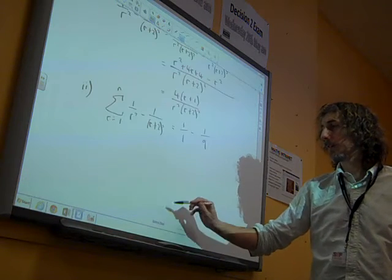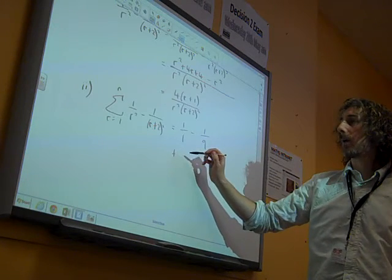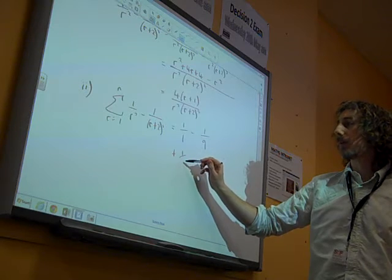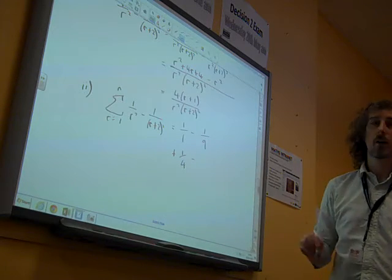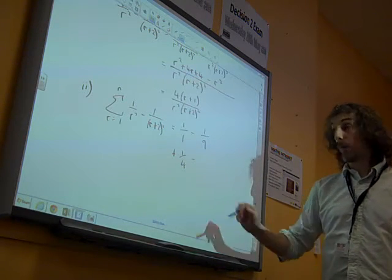which is 1 over 9, plus 1 over 2 squared, so 1 over 4, minus 1 over 4 squared.